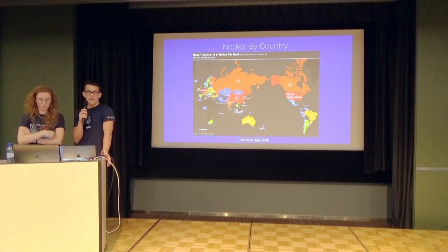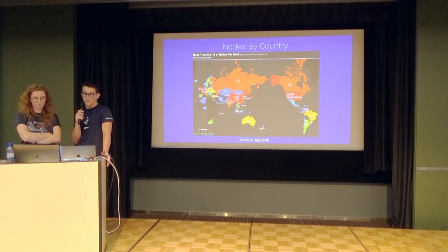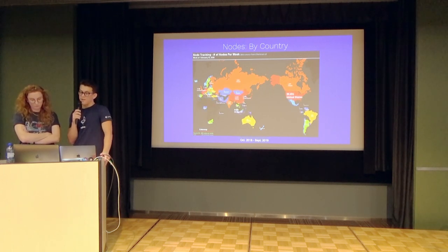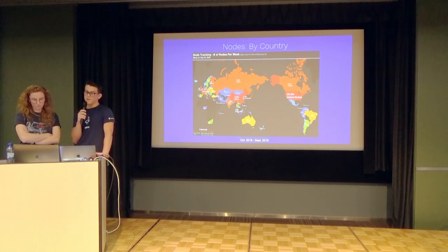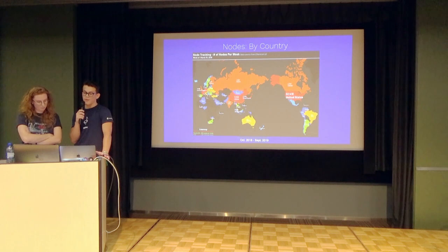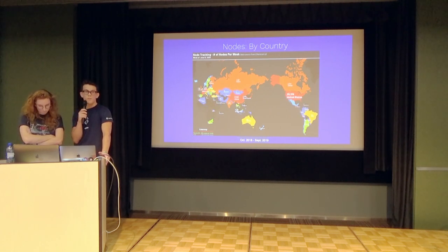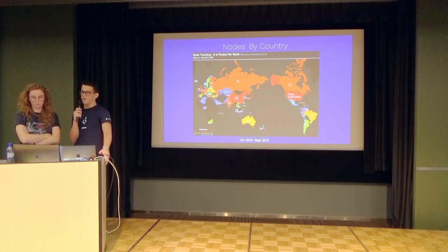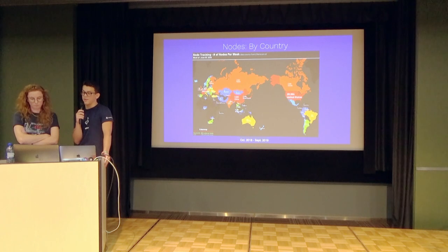Next we want to look at node diversity. This data is from NodeTracker on Etherscan and shows node count by country starting in 2018, which is unfortunately only as far back as the data goes. It's a heat map, so the warm colors are the highest node counts and the cooler colors are the lower node counts. In general, we see some unfortunately bare areas that stay pretty consistent over time, such as the African continent. But we do see pretty uniform fluctuations, and it's helpful to see that the network is physically quite distributed and decentralized across the globe and across a variety of legal and political systems.